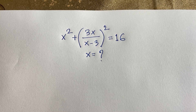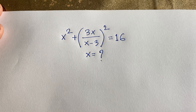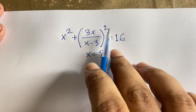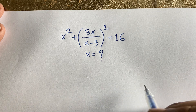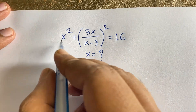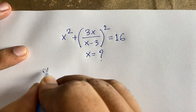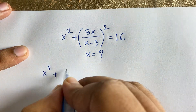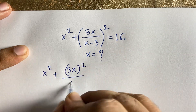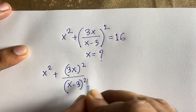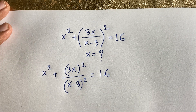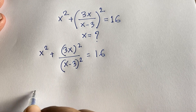Hello everyone. In this video we solve this interesting math question: (x² + 3x)/(x-3))² = 16. What is x? First, I can rewrite this as (x² + 3x)² over (x-3)² = 16. There is a least common value of (x-3)².